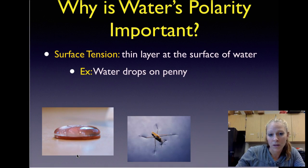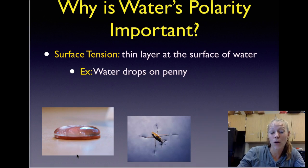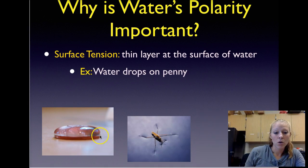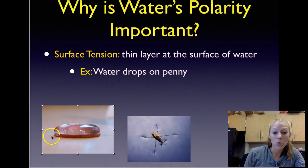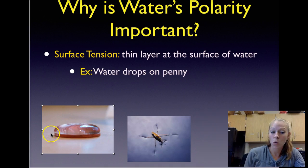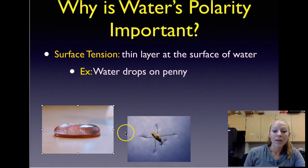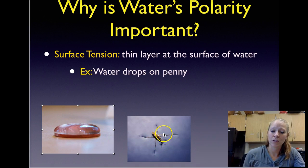This hydrogen bond between water molecules allows for something called surface tension, which is a thin layer at the surface of water. We did this as an activity in class — we put water drops on the back of a penny. The water was attracted to itself because of these hydrogen bonds, so even though it looks like it should pour over the side, it stays there. This surface tension, or film, is what the water strider is resting on. This is why it doesn't sink.